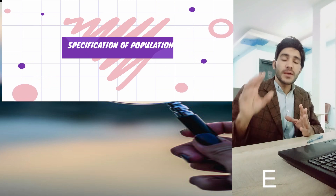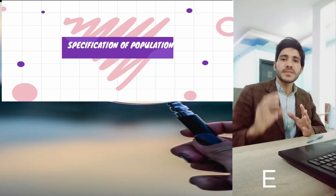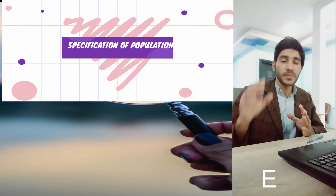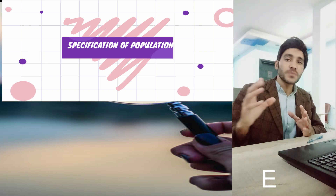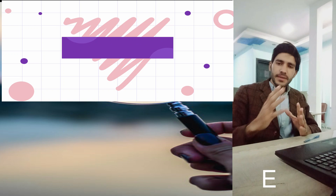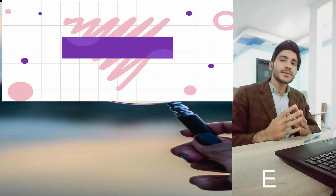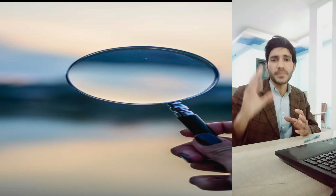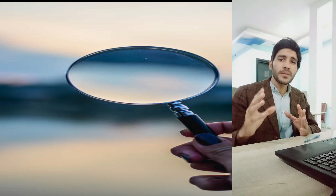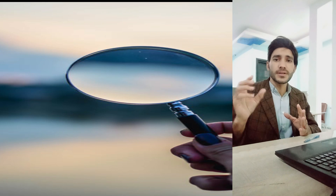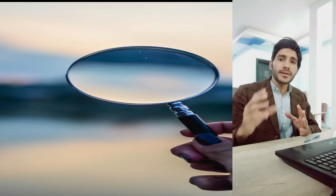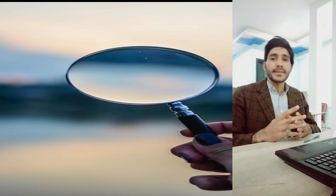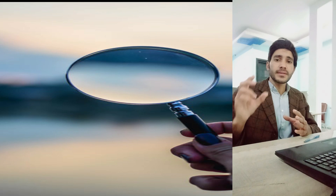The fifth step is specification of population. When you are conducting your research you have to identify the population — which population are you going to conduct your research on? For example, if you are going to conduct research on COVID-19, your population will be COVID-19 patients. If you are going to conduct research on students, your population will be students.